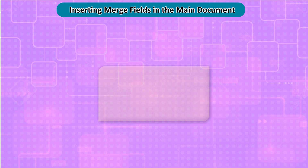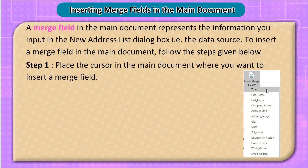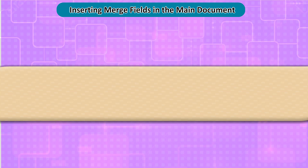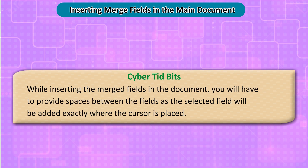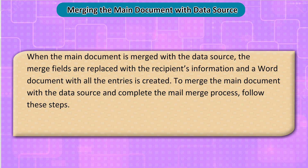Inserting merge fields in the main document: a merge field in the main document represents the information you input in the New Address List dialog box, i.e., the data source. To insert a merge field in the main document, follow these steps. Step 1: place the cursor in the main document where you want to insert a merge field. Step 2: open the drop-down list under the Insert Merge Field button in the Write and Insert Fields group on the Mailings tab, and select the required merge field one by one. Note: while inserting merged fields, provide spaces between the fields, as the selected field will be added exactly where the cursor is placed.